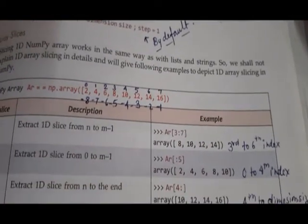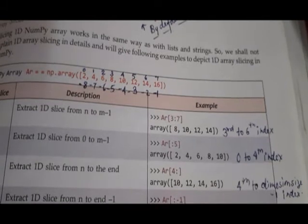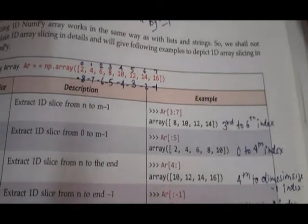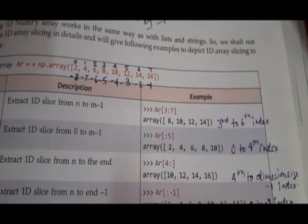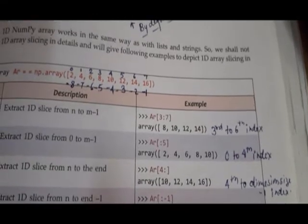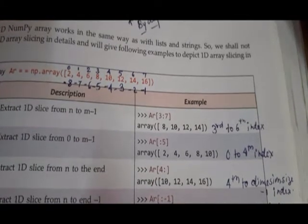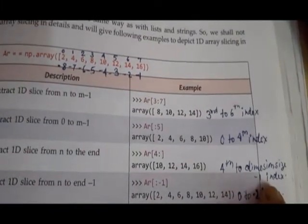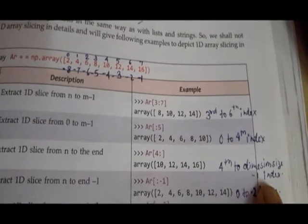The third slice is [4:] — it starts from index 4 and goes to dimension size minus 1, which is index 7, because dimension size is 8. So it goes from 10 to 16. Next slice is [:-1] — it goes from 0 up to index minus 2 (one less than minus 1), so it goes from 2 to 14.